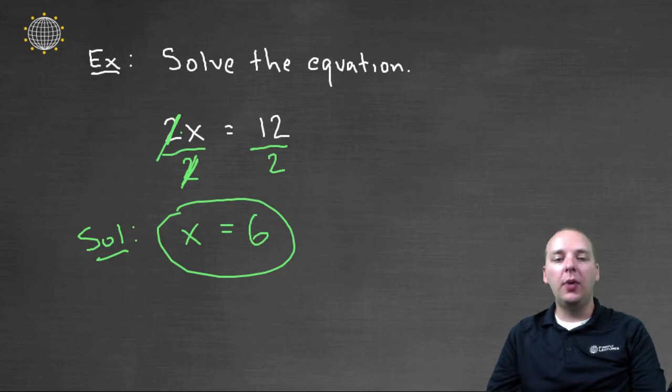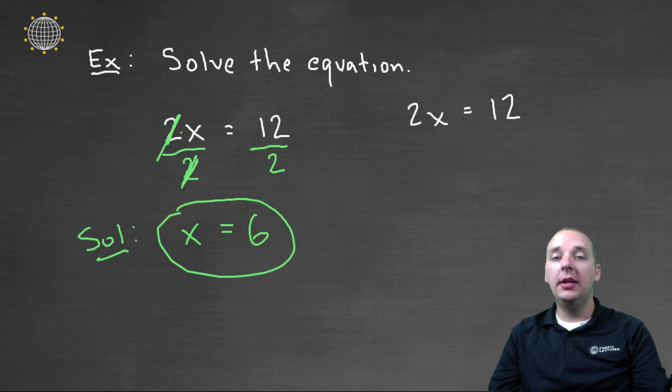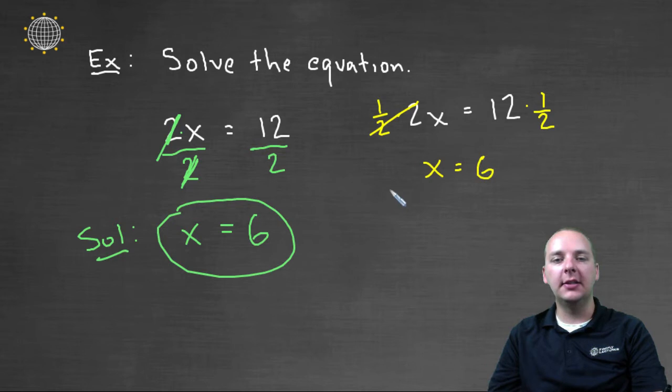Now one other way to say this is instead of 2x equals twelve, instead of dividing or using that language, you could easily say multiply by a half. And that has the same effect. Multiplying by a half is like dividing by two. Two times a half is one. And so we get x equals twelve times a half, which is six, which is the same answer as what we have here.